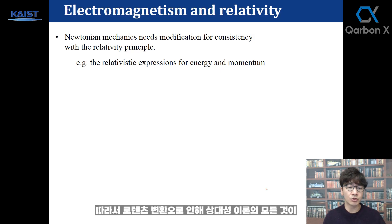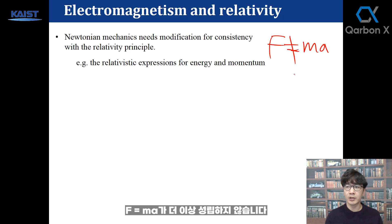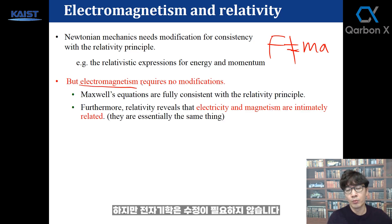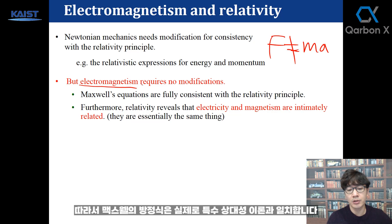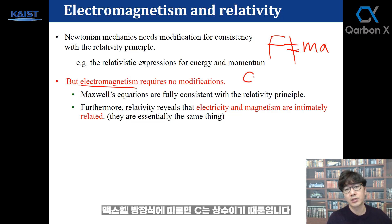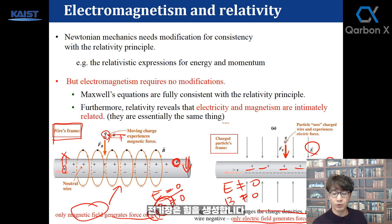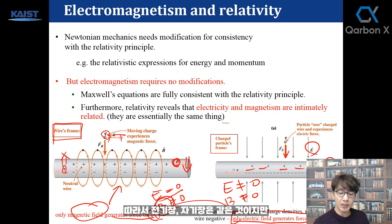So Newtonian mechanics — F equals ma — no longer holds, because of relativity. Everything changed due to the Lorentz transformation. However, electromagnetism requires no modification. Maxwell's equations are actually consistent with special relativity, because c is constant according to Maxwell's equations. Electric field and magnetic field are essentially the same thing — electric field generates force. It depends on which inertial reference frame you observe from.